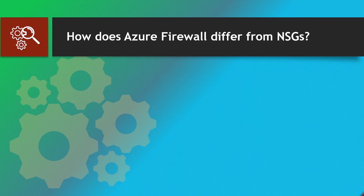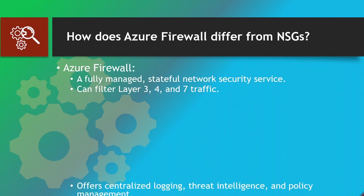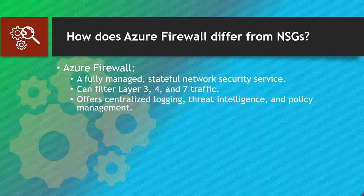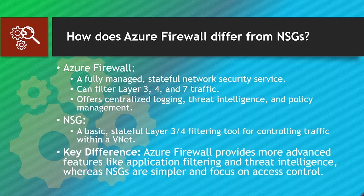How does Azure Firewall differ from NSGs? Azure Firewall is a fully managed stateful network security service that can filter Layer 3, 4, and 7 traffic, and offers centralized logging, threat intelligence, and policy management. NSG is a basic stateful Layer 3/4 filtering tool for controlling traffic within a VNet. Key difference: Azure Firewall provides more advanced features like application filtering and threat intelligence, whereas NSGs are simpler and focus on access control.